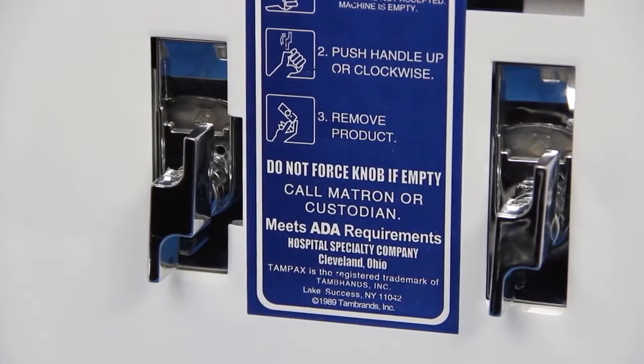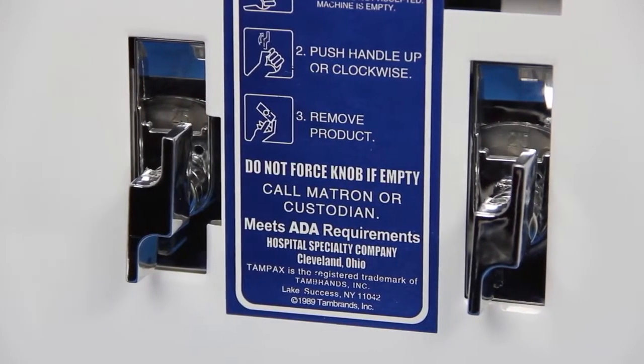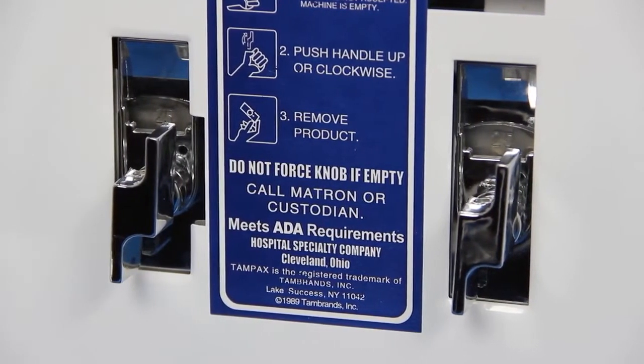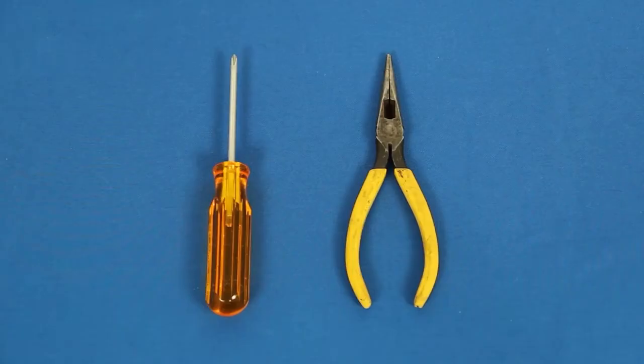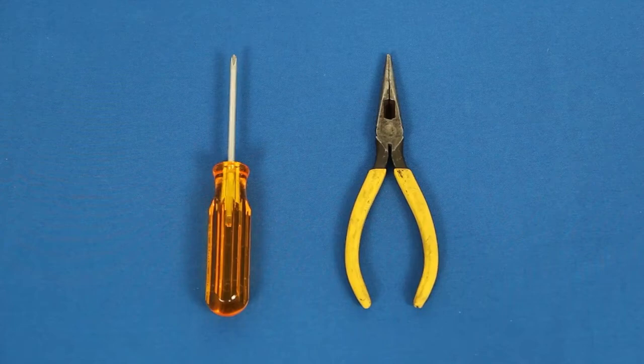The coin mechanism can be easily switched between free vend and 50, 25, or 10 cent pay vend options. The only tools required are a Phillips head screwdriver and needle nose pliers.